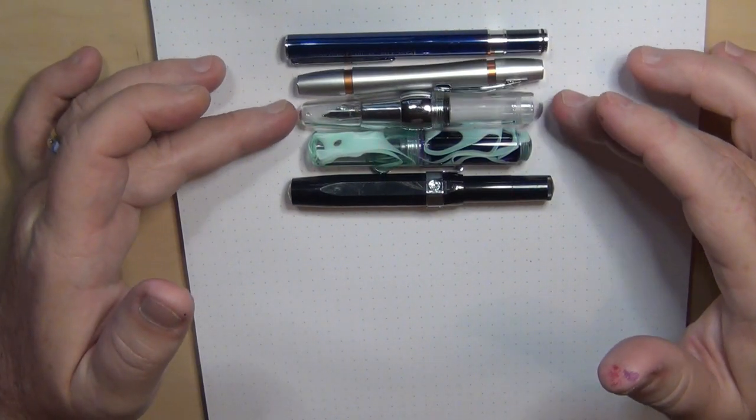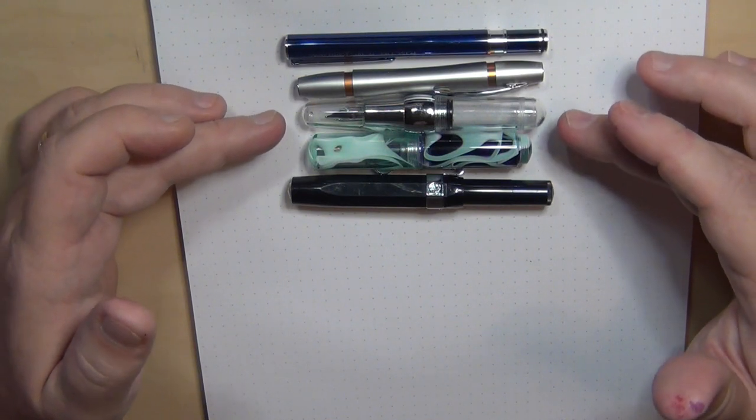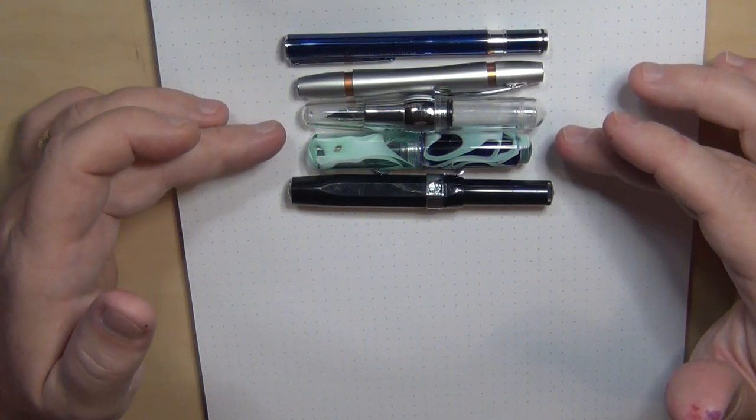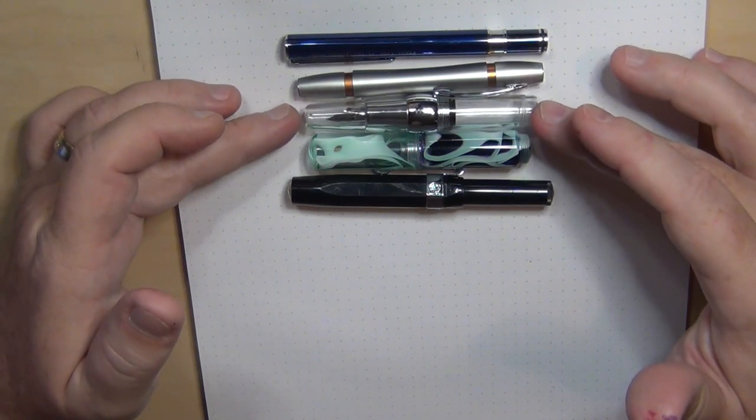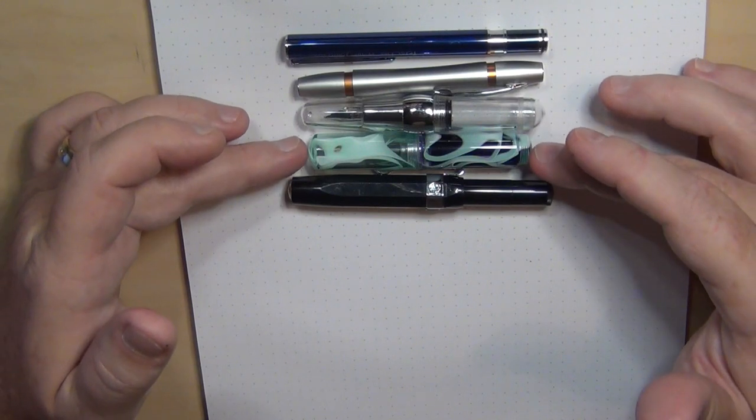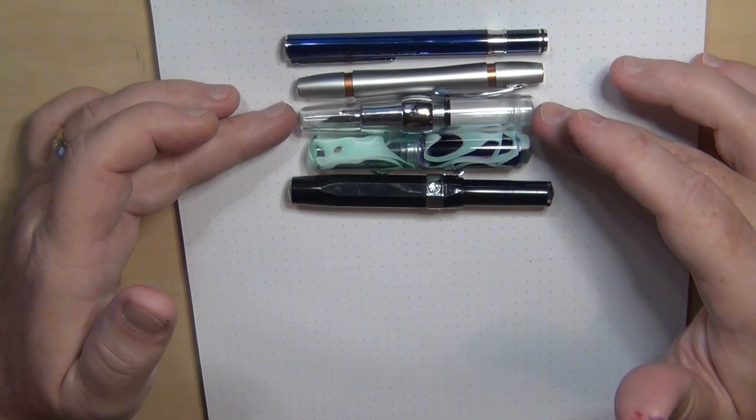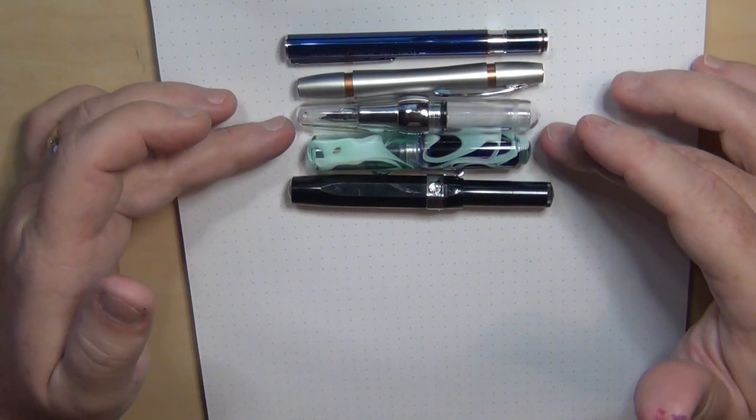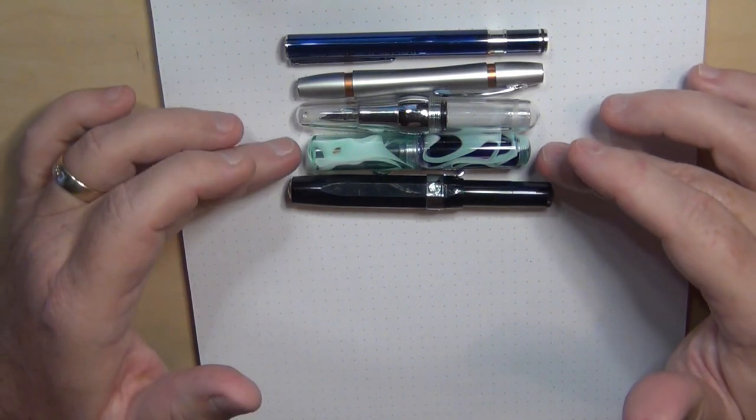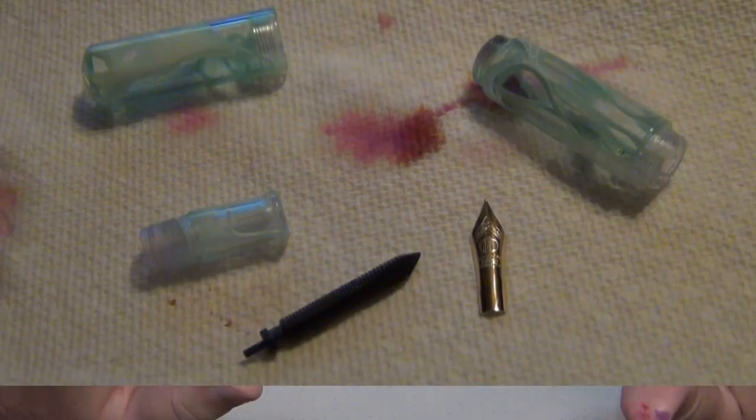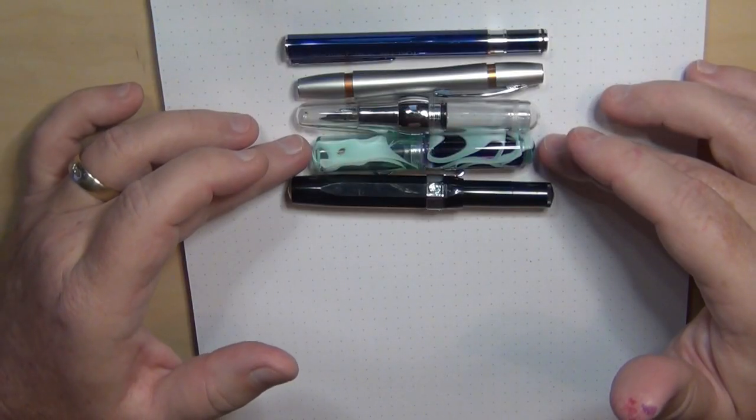That goes for about $30, the Stipula Passaporto. If I had to do it again and I just wanted a good clear demonstrator and I only wanted to buy one, even though the Stipula Passaporto is about twice the price of the Wan Kai Mini, I probably would go the Stipula Passaporto, only because of the quality issues I've had with the Mini. That being said, I did manage to get a little bit better performance out of it by flushing it, I tore it apart, and then I put it back together and I put in a different ink.